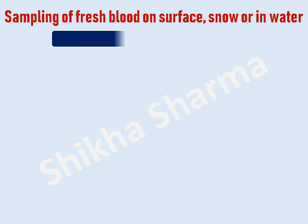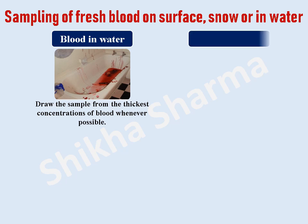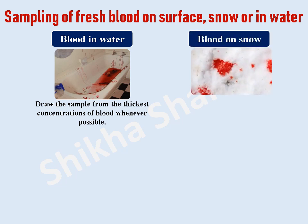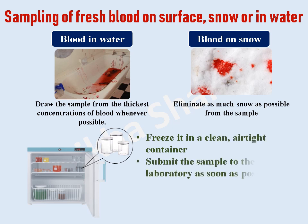The third potential source of blood can be fresh blood in snow or water. The procedure for collecting fresh blood from most surfaces is the same as described earlier for blood on a person. However, when blood is in a filled bathtub or some other body of water, or when it is on snow, a different approach is required. For blood in water, draw the sample from the thickest concentrations of blood whenever possible. When gathering blood from snow, eliminate as much snow as possible from the sample, freeze it in a clean airtight container, and submit the sample to the laboratory as soon as possible.